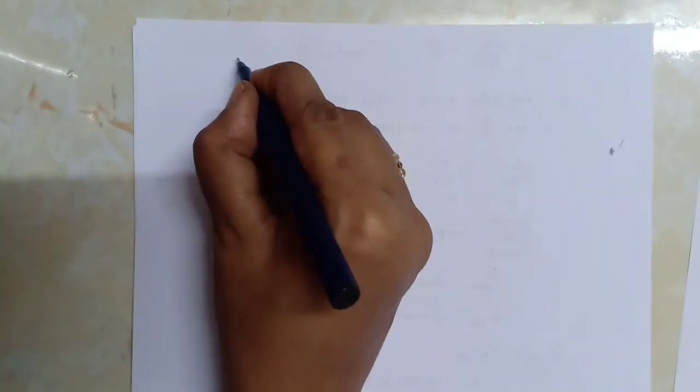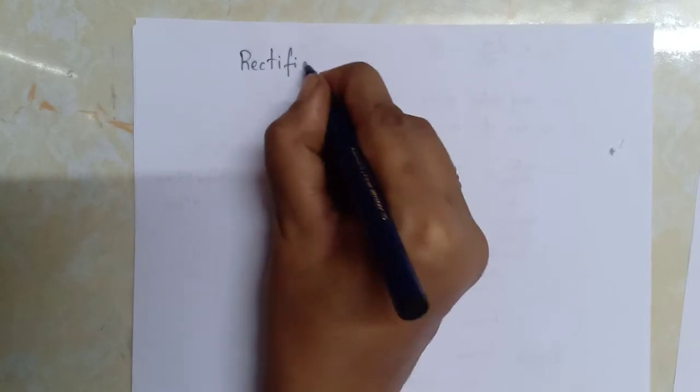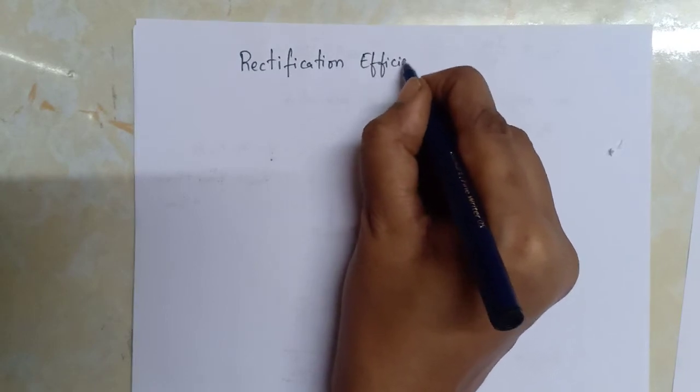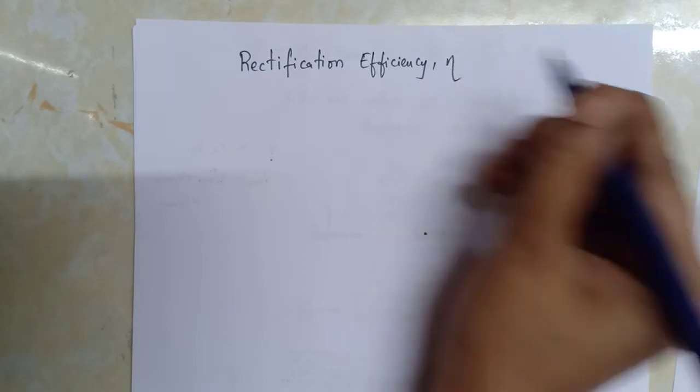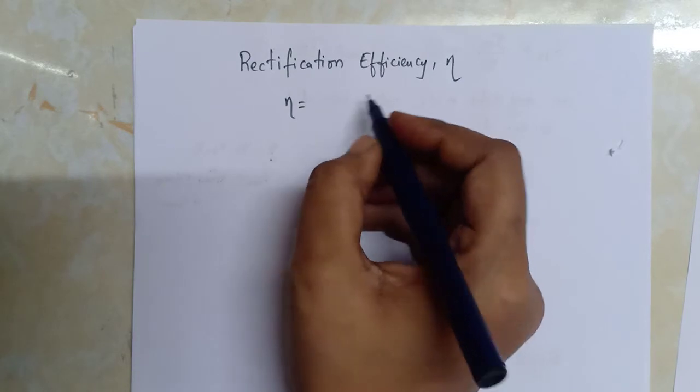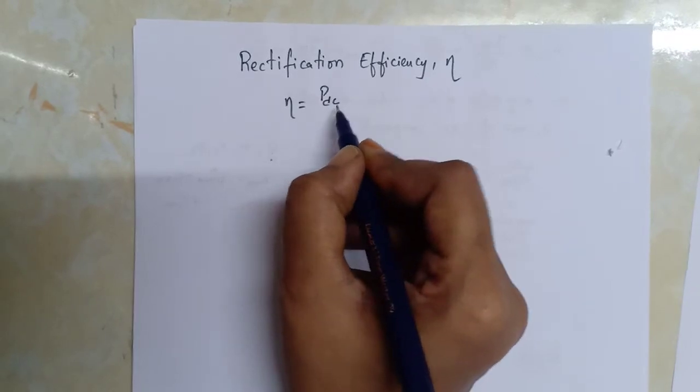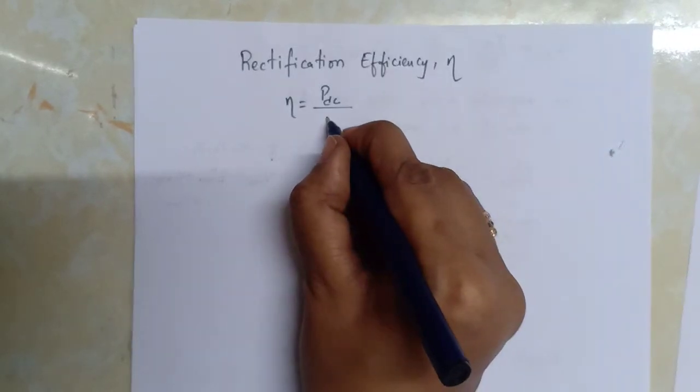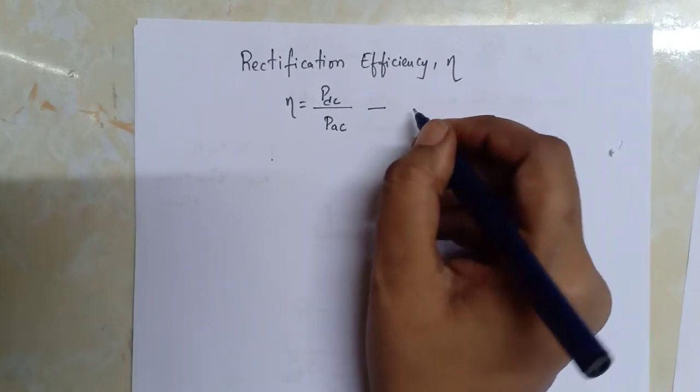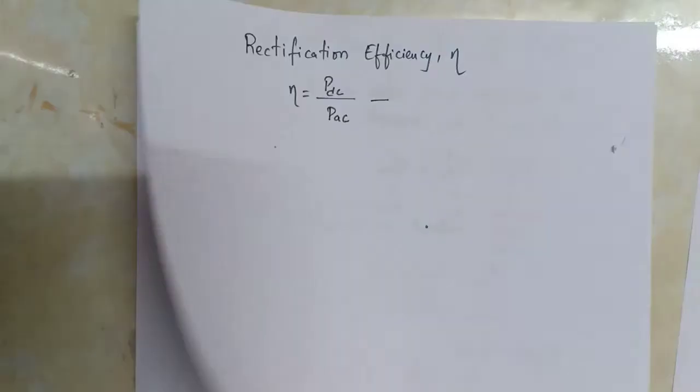Let us calculate rectification efficiency for half wave rectifier. It is denoted by eta. Rectification efficiency is given by DC power delivered to the load (PDC) by AC power from the input (PAC). Let us take this as equation number 6.